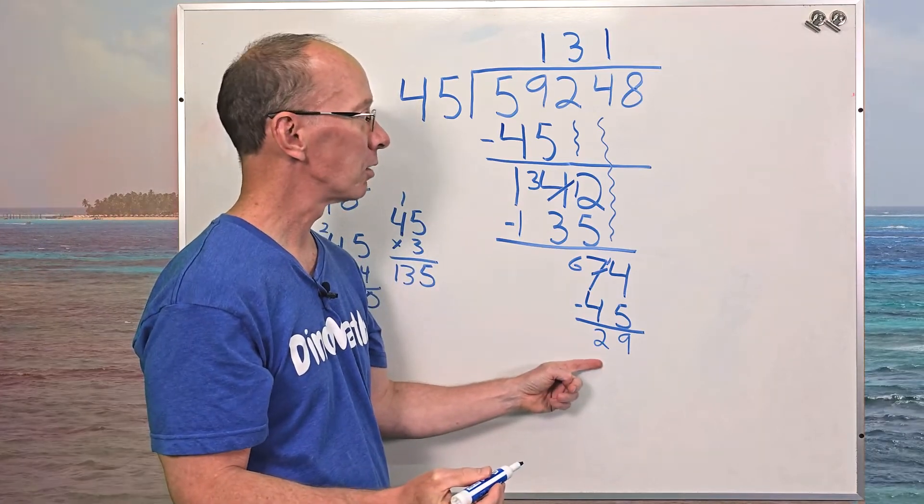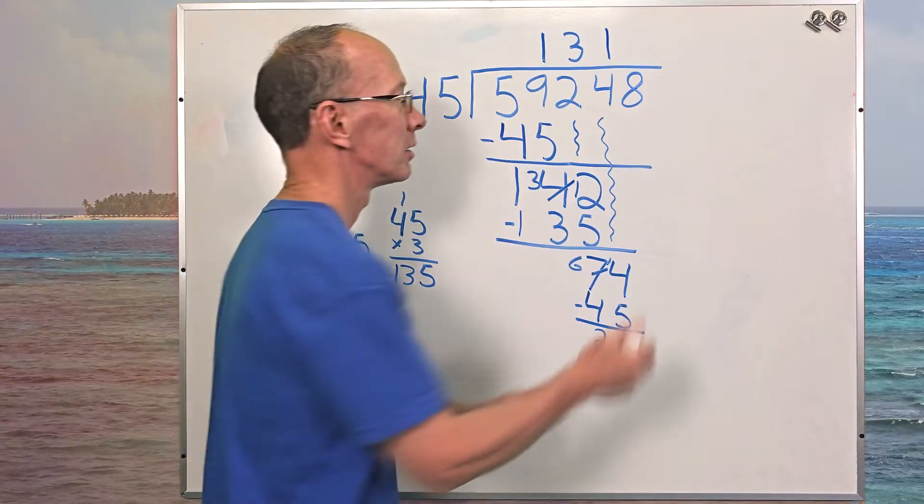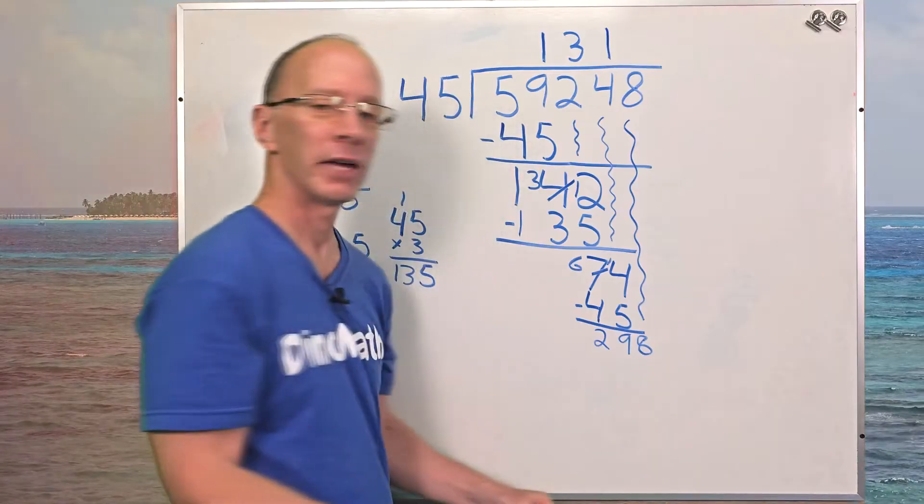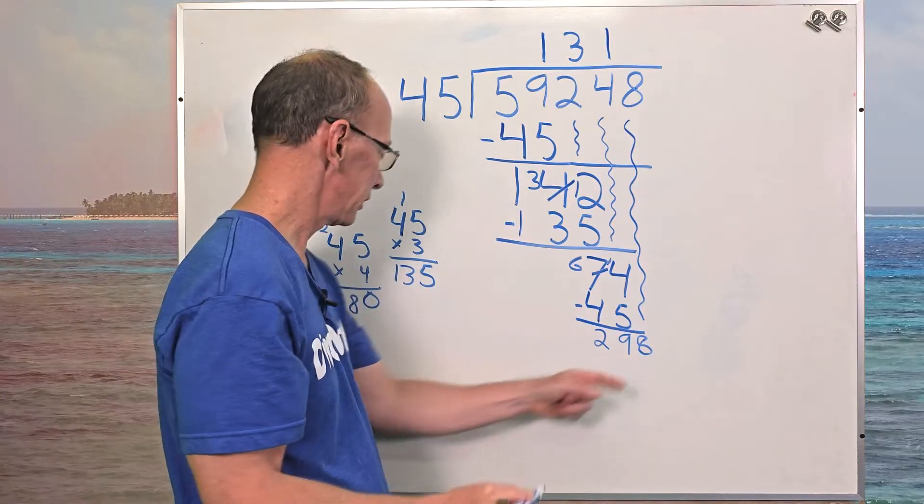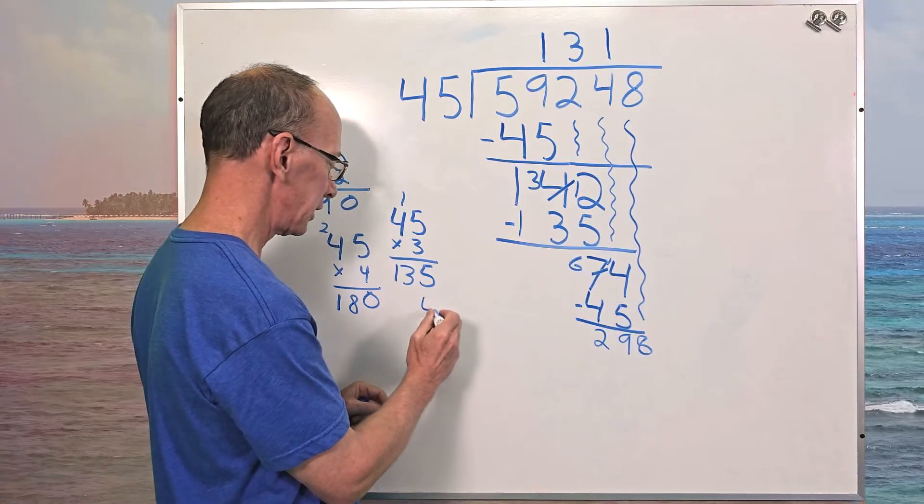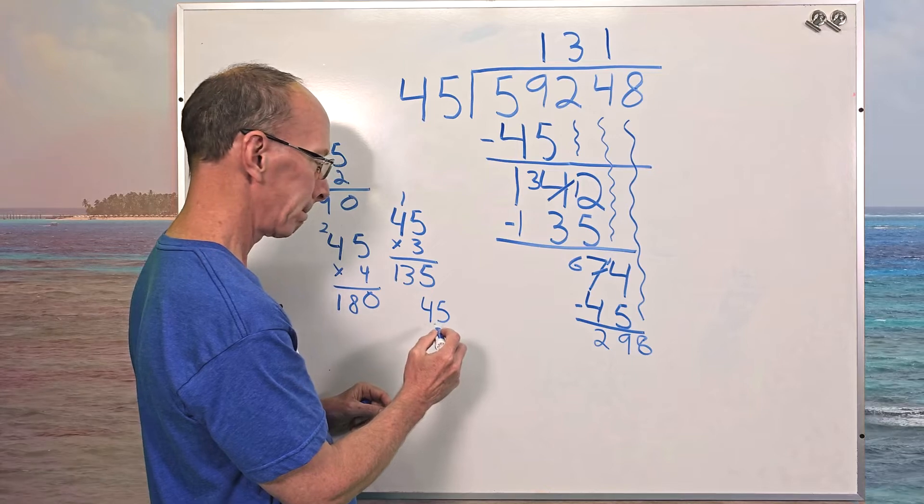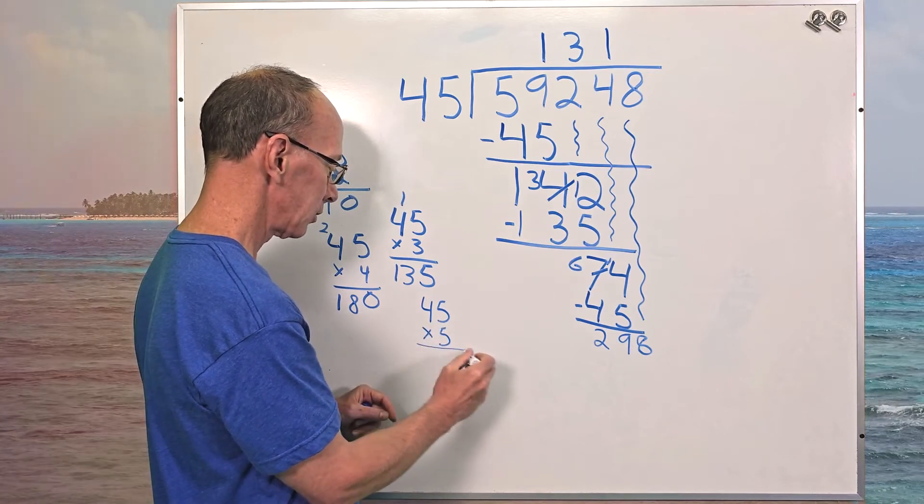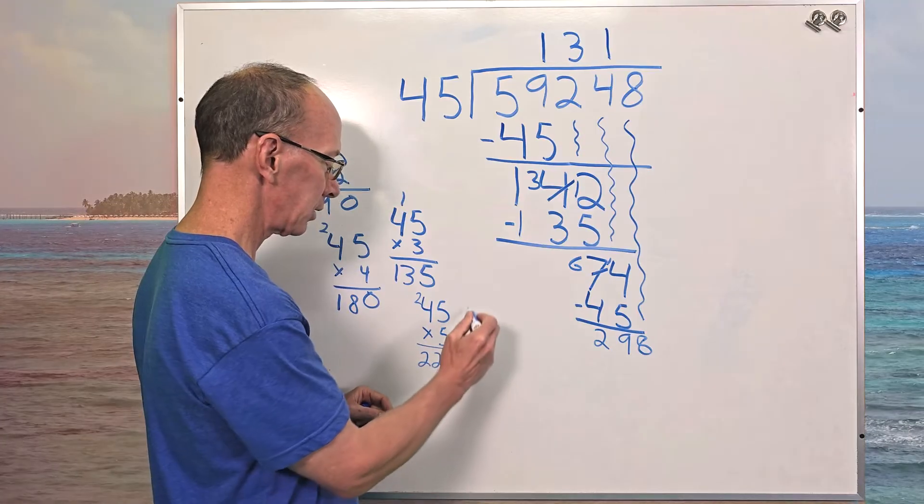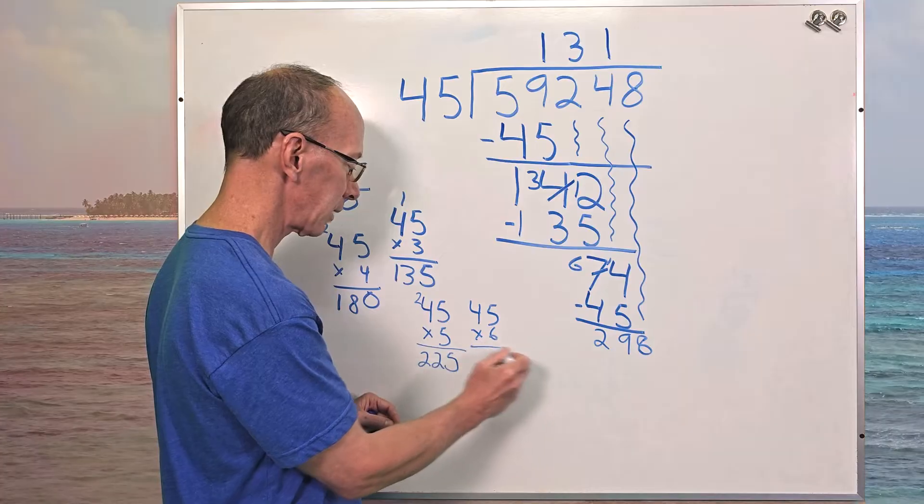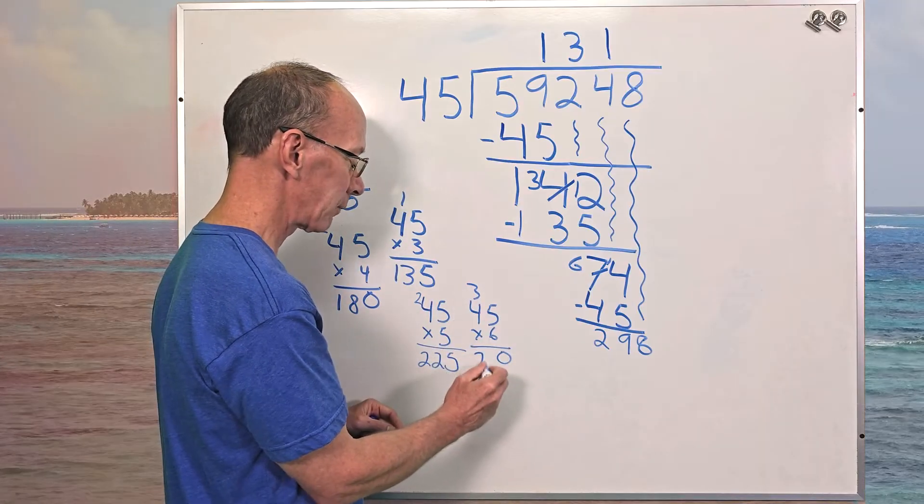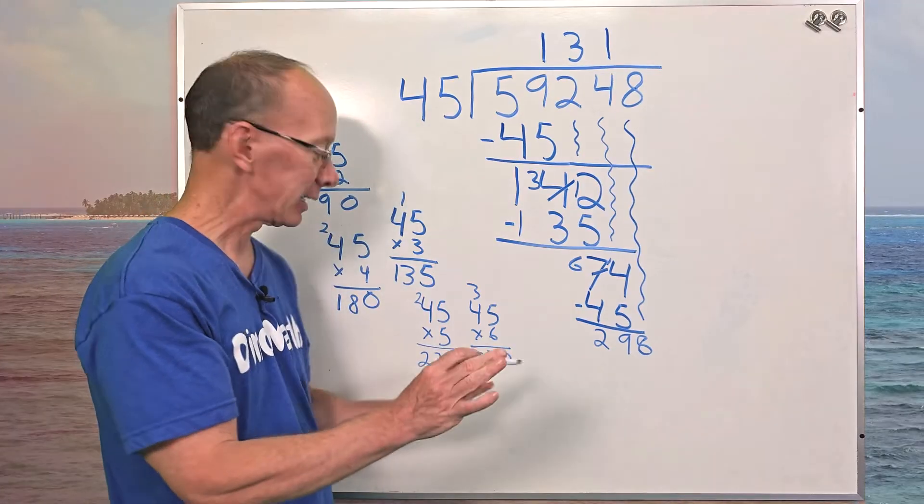Can I put 45 into 29? You can't. That's too small. So now the next step, bring the next number down. Bring that next number down, right here. 8. So now I have 298. Do I have a number here that's close to that? I think I might have to do a couple more little figurines here. 45, let's try maybe 5. So 5 times 5 is 25, carry the 2. Five times 4 is 20, then 22. Let's try 45 times 6. Six times 5 is 30, carry the 3. Four times 6, 24, 25, 26, 27. That's as much as we can go.